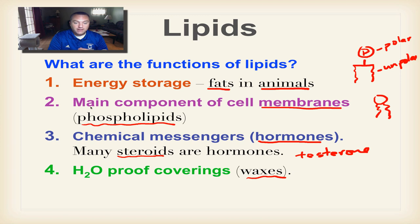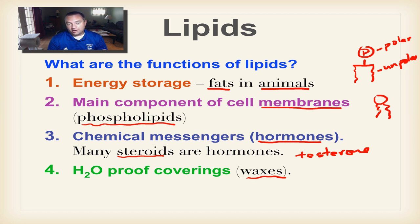All of these functions — energy storage, main component of the cell membrane, chemical messengers, and waterproof coverings — are very important and will likely appear on a test or quiz. This concludes our episode and all of our episodes on chapter 2b covering carbohydrates and lipids. In chapter 2c we'll learn about proteins — until then, we'll catch you on the flip side.